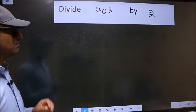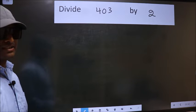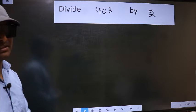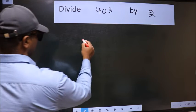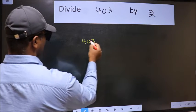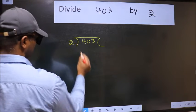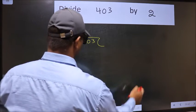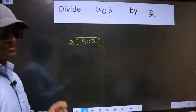Divide 403 by 2. To divide this, we should frame it in this way: 403 and 2 here. This is your step 1.